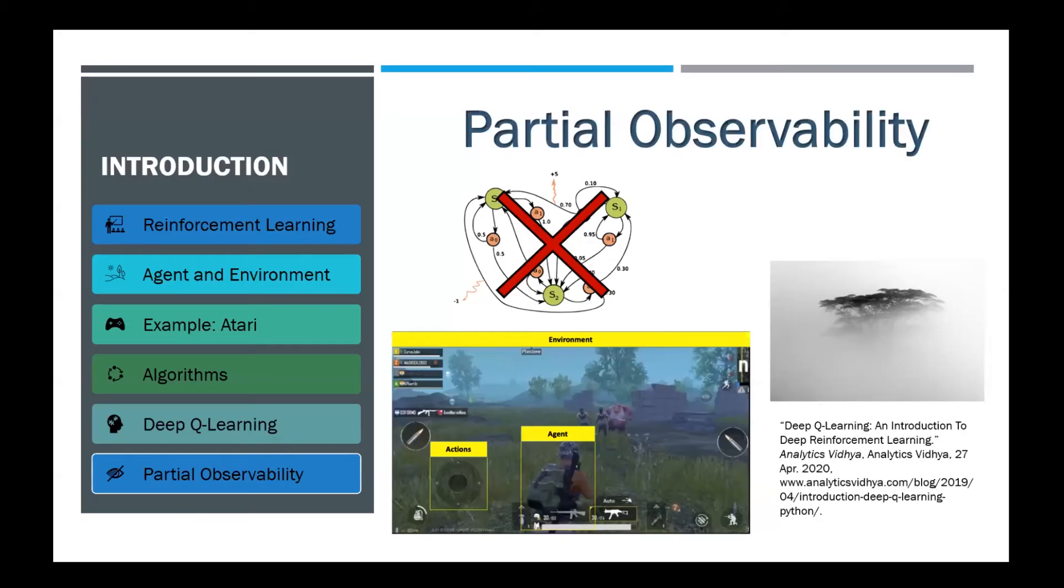Up until now, we analyzed tasks modeled by Markov decision processes. This means that at every time step, the agent knows all the information about the new state. But in the real world, oftentimes our agent only observes parts of the world and other parts are left unknown or uncertain. This poses a challenge for Q-Learning-based algorithms, which assume full observability in order to converge. We will now see one way to deal with this.